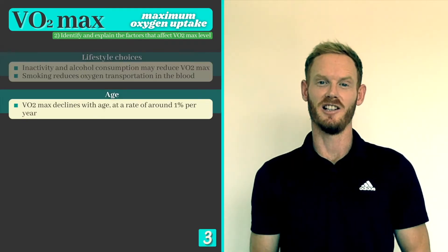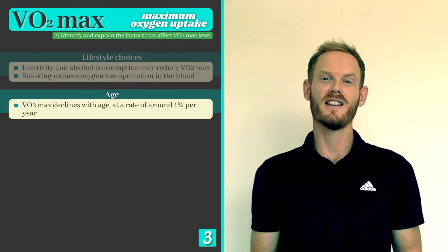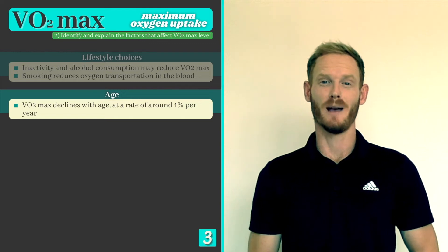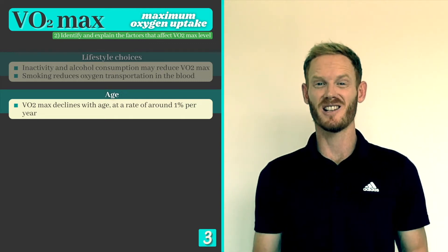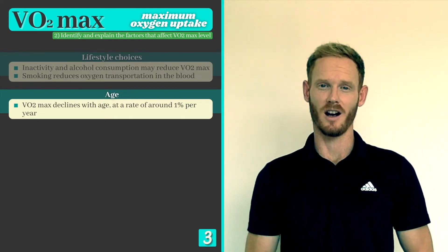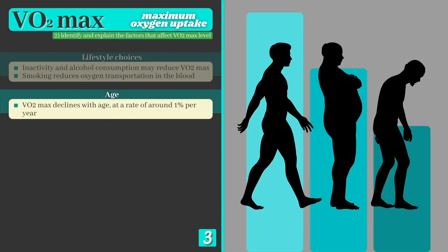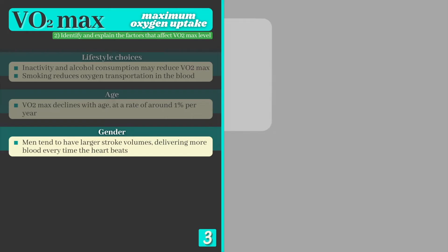Number two is age. Unsurprisingly, VO2 max level tends to decline as we get older. It's usually highest in 18 to 25 year olds and declines at a rate of around 1% per year after that.